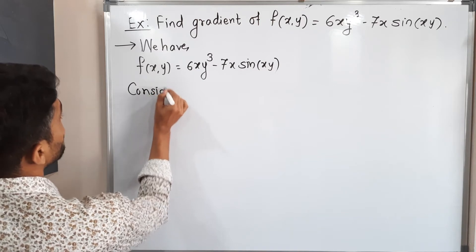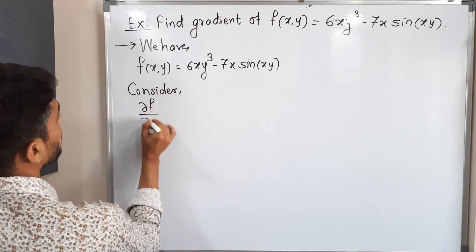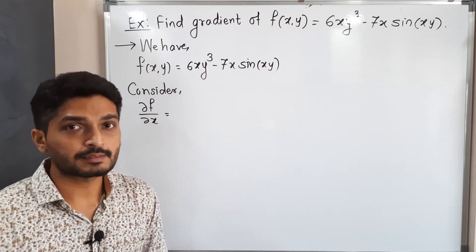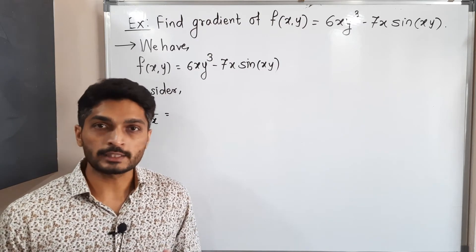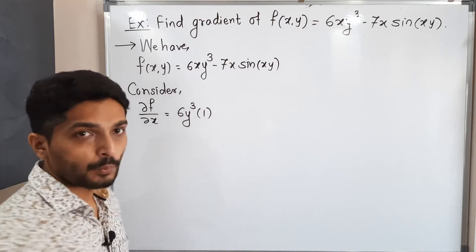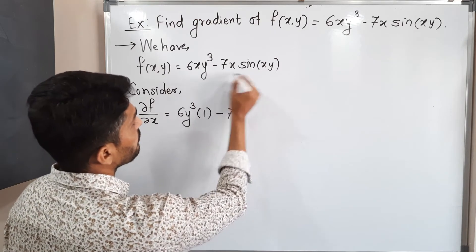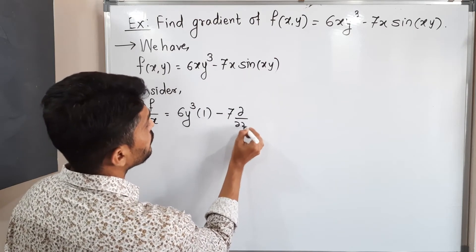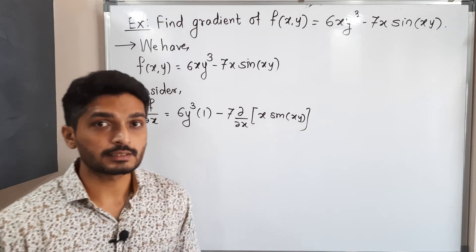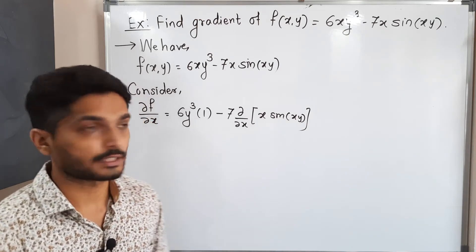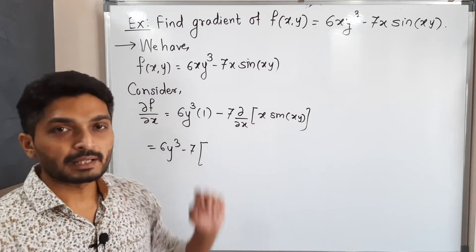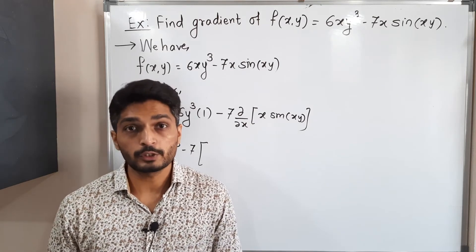Consider ∂f/∂x. We find the derivative with respect to x; the minus sign means we can take separate derivatives. When taking the derivative with respect to x, y is a constant. So 6y³ is constant and the derivative of x is 1. After that, for the next term, there is a product of two functions of x — namely x and sin(xy) — so we cannot find the derivative directly and must use the product rule: u·v′ + v·u′.